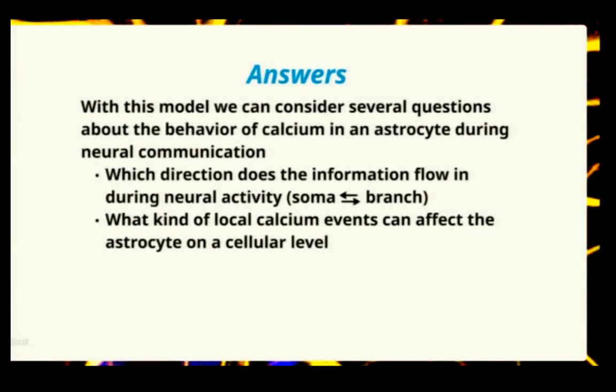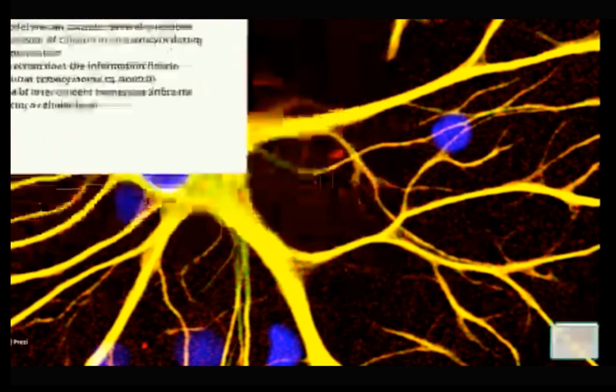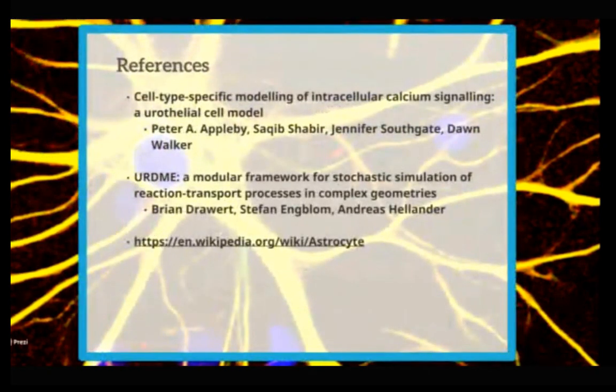Does information only travel from the branches of the astrocyte to the soma, or does the soma in turn affect the branches? I would like to consider what kind of activity you need in astrocytic branches to elicit a response in the soma.